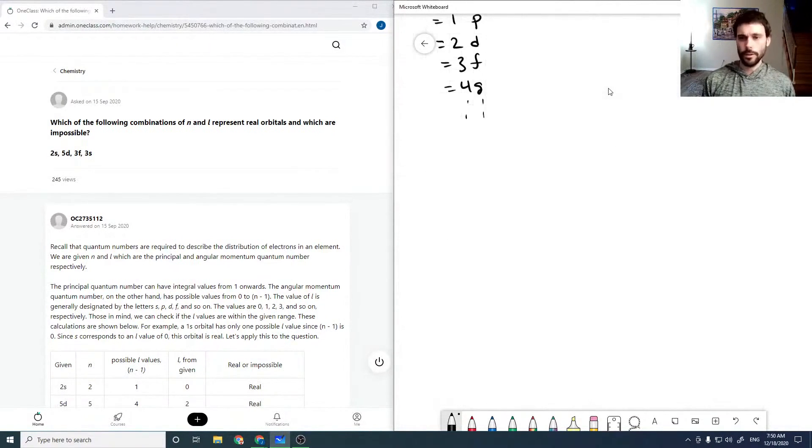So for a 2s orbital, we have n equals 2, l equals 0. So that looks good, because l is less than or equal to n minus 1.